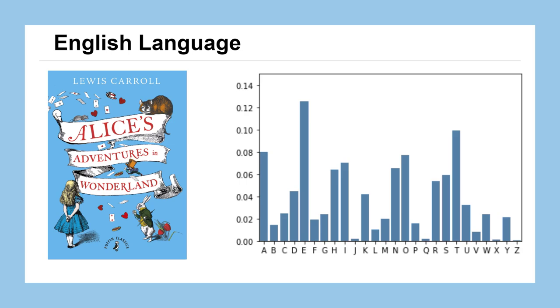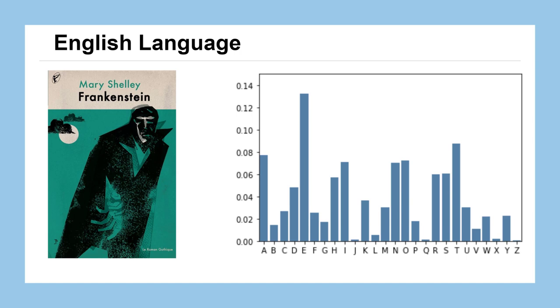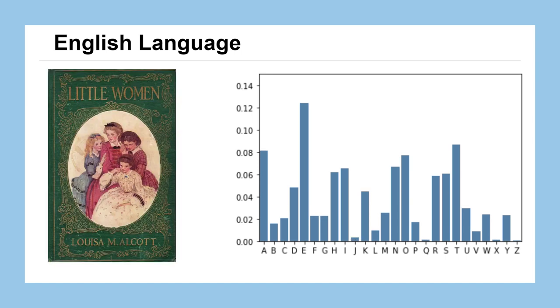Here we've got a bar chart for Alice in Wonderland. Here's one for Frankenstein. And here's one for Little Women. And you'll see these bar charts don't really change that much from book to book, which maybe that's surprising because they're about different characters. They're in different places. You would imagine a lot of the words being used would be very different in these books. However, this underlying pattern remains.